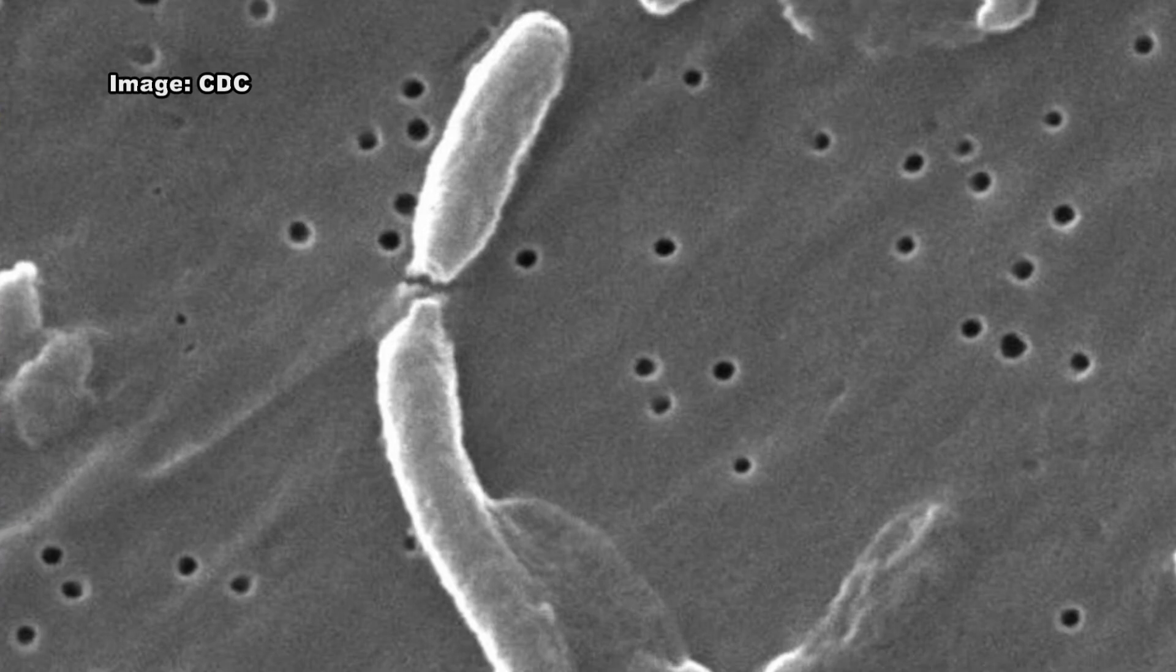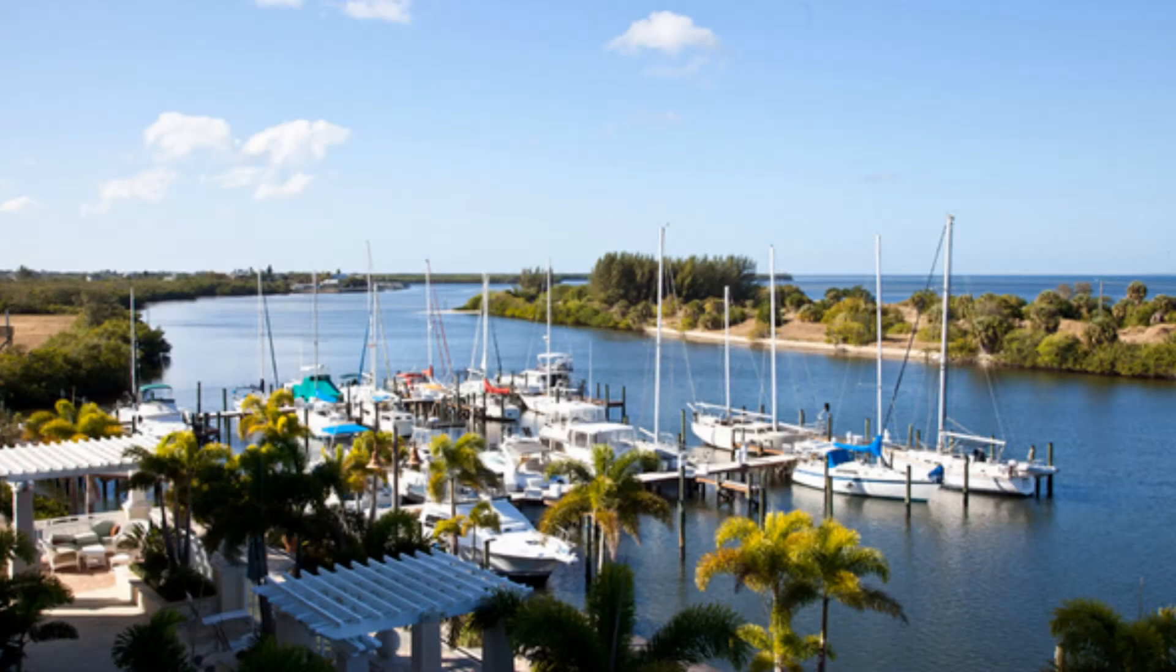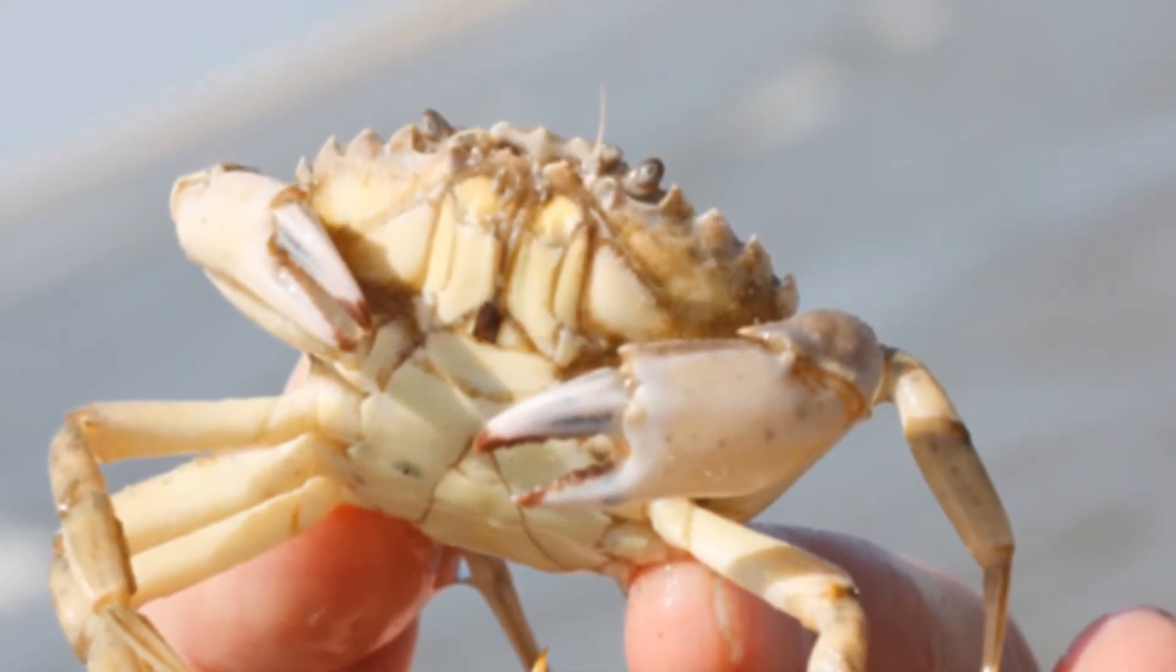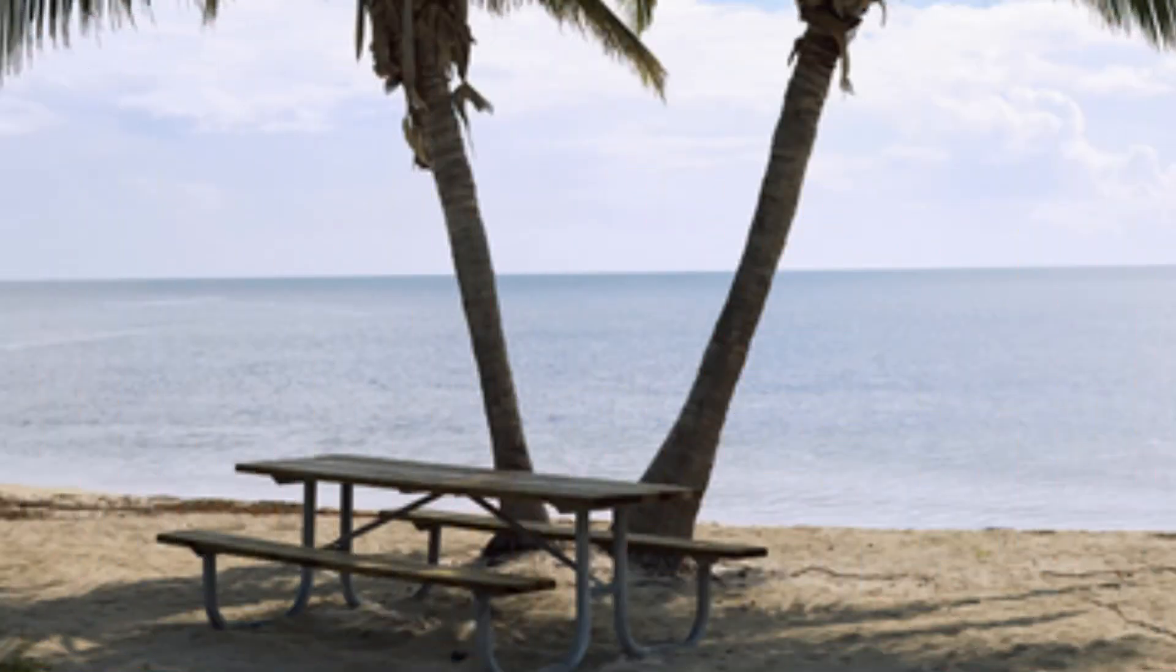Vibrio cholerae may also live in the environment in brackish rivers and coastal waters. Shellfish eaten raw have been the source of cholera, and people in the United States have contracted cholera after eating raw or undercooked shellfish from the Gulf of Mexico.